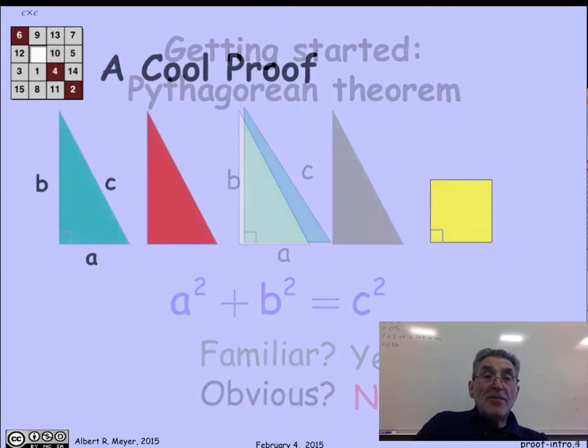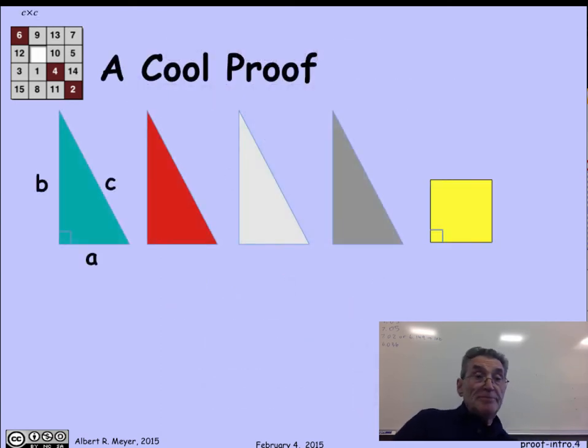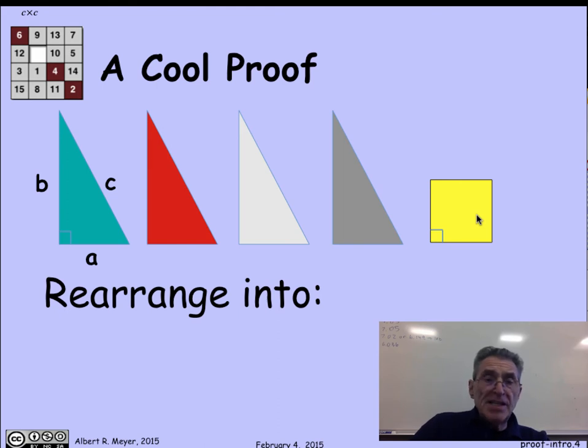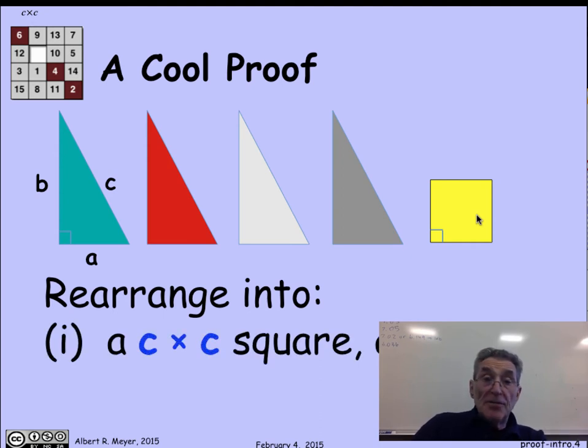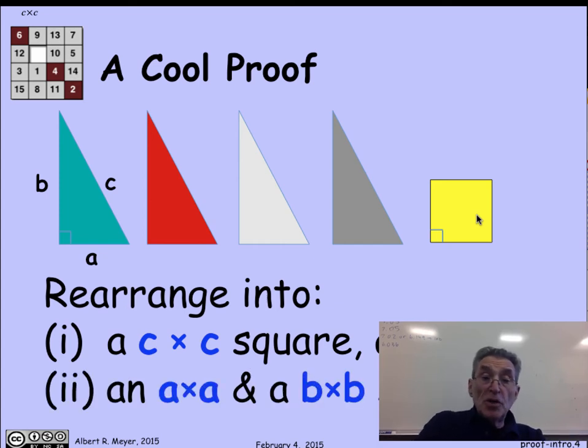So let's look at one of my favorite proofs of the Pythagorean theorem. There are four triangles that are all the same size, four copies of this ABC triangle which we've put in different colors to distinguish them, and a square which for the moment is of unknown size. The proof consists of taking these four shapes and reassembling them so that they form a c by c square first, and then finding a second arrangement so that they form two squares, an a by a square and a b by b square. Then by the theorem of conservation of paper or conservation of area, it has to be that the c by c area is the same as the a by a plus b by b area. And so a² + b² = c².